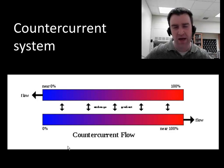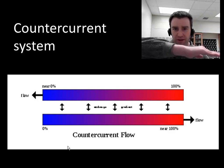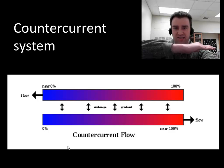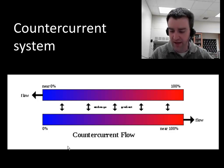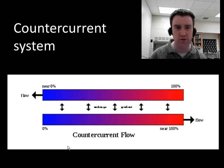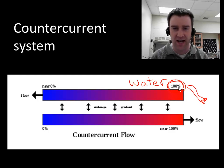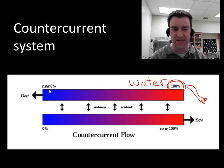A counter-current system is simply this idea: we want the flow of water through the gills to go one way, and we want the blood coming in to be oxygenated flowing the opposite way — we want the two liquids flowing counter to each other. The top liquid is the water flowing through the gills, starting off with about 100% oxygen, and as it exits the gills as much oxygen as possible has left.